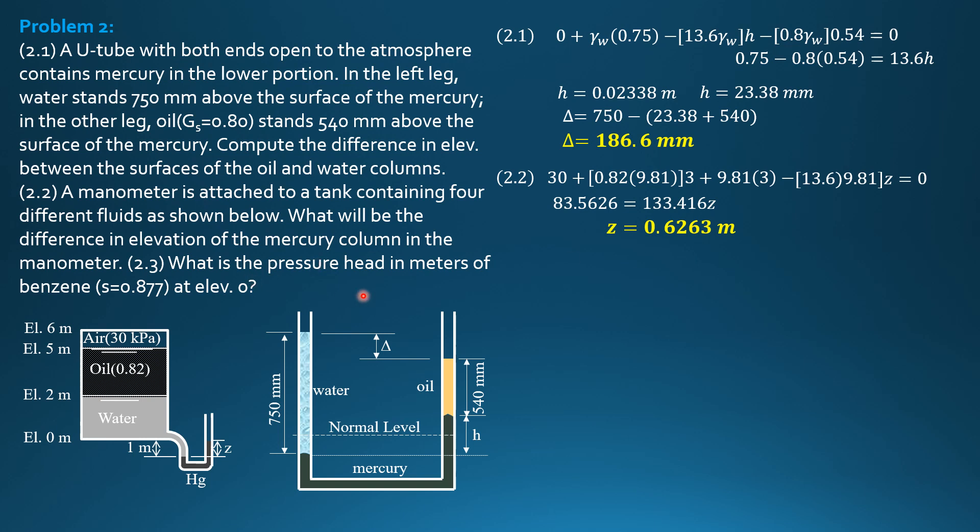Then what is the pressure head in meters of benzene, specific gravity 0.877, at elevation zero? So it is here. So we find the pressure here as beginning above again, 30.